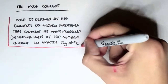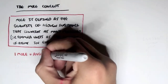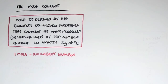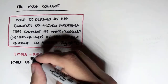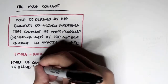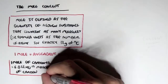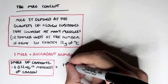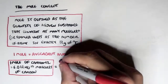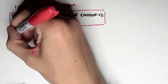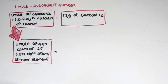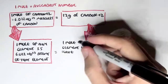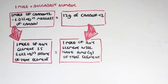That in itself is a very complex definition. But essentially, one mole equals Avogadro's number, which is 6.022 times 10 to the 23. One mole of any element is 6.022×10²³ atoms of that element, and will have, in grams, the atomic mass unit of that element.